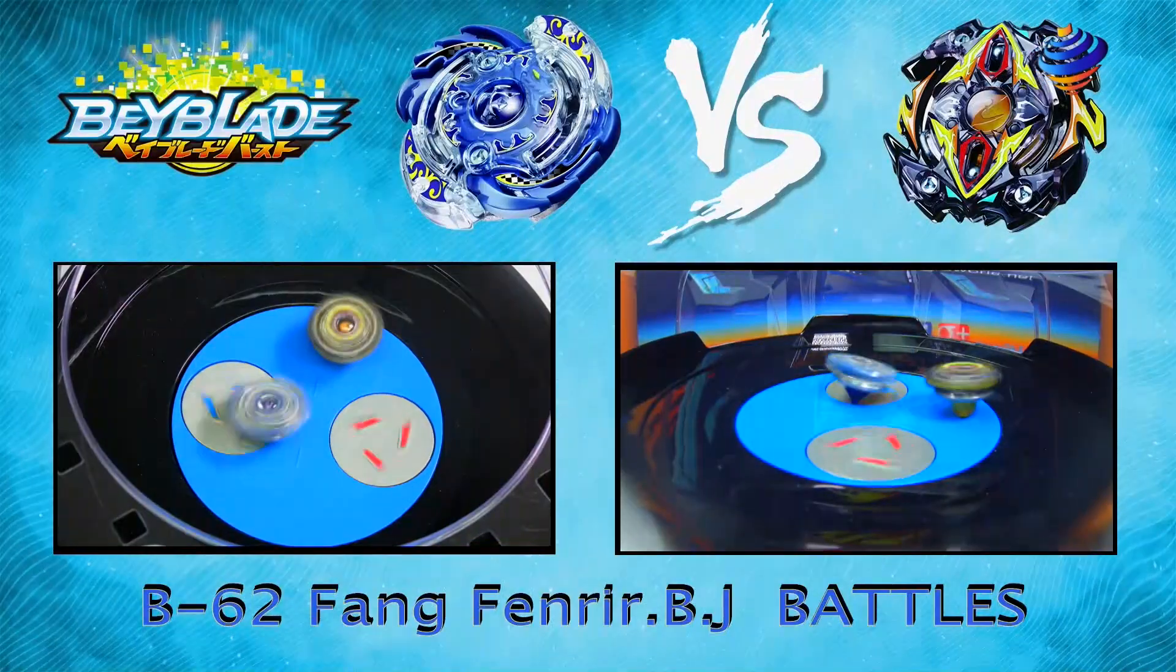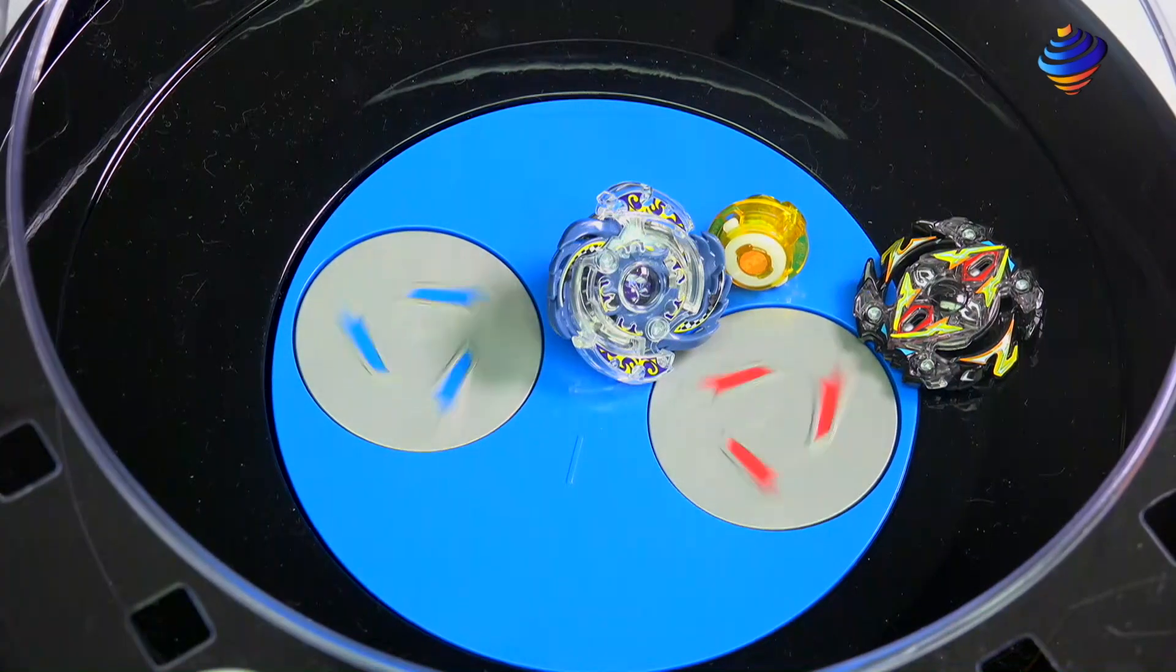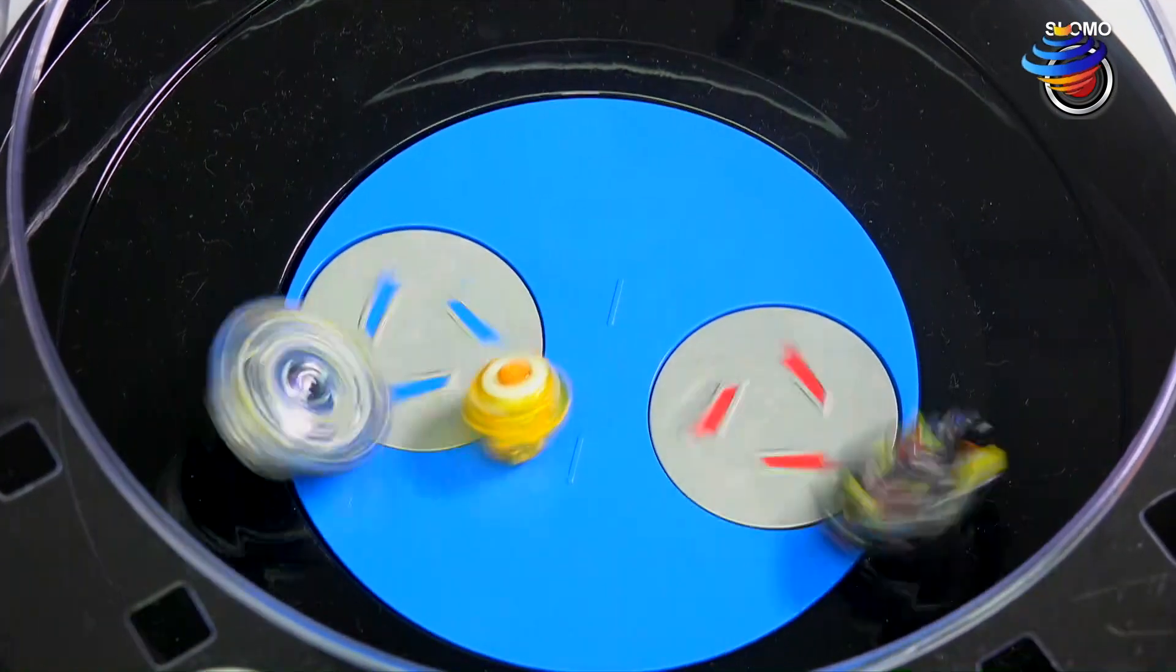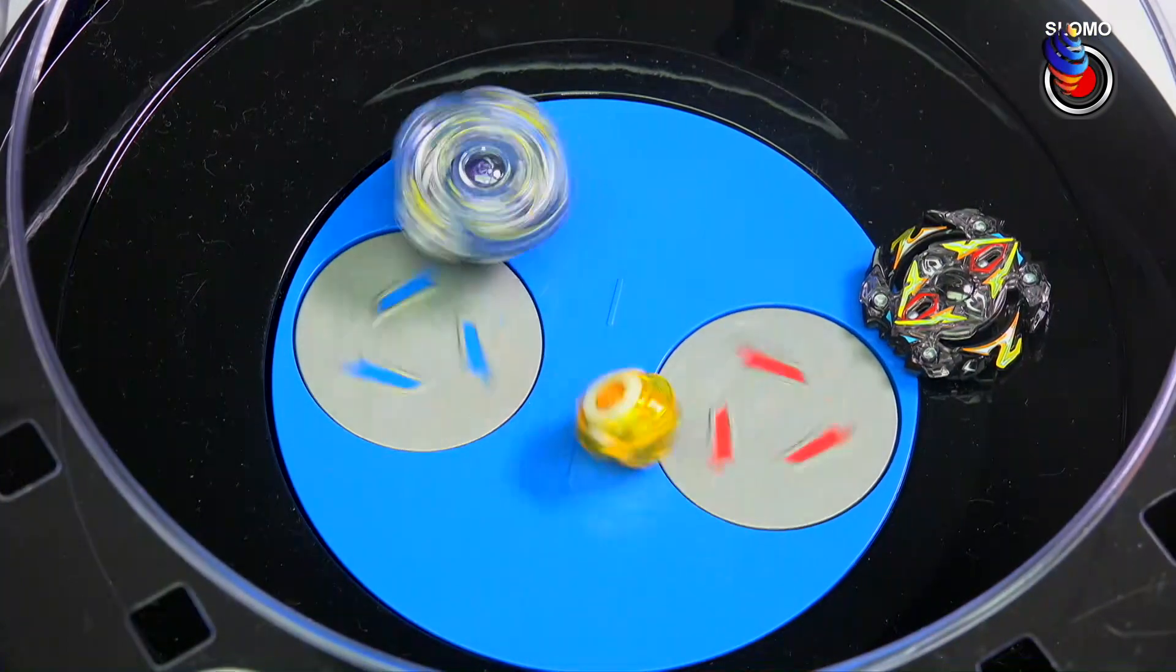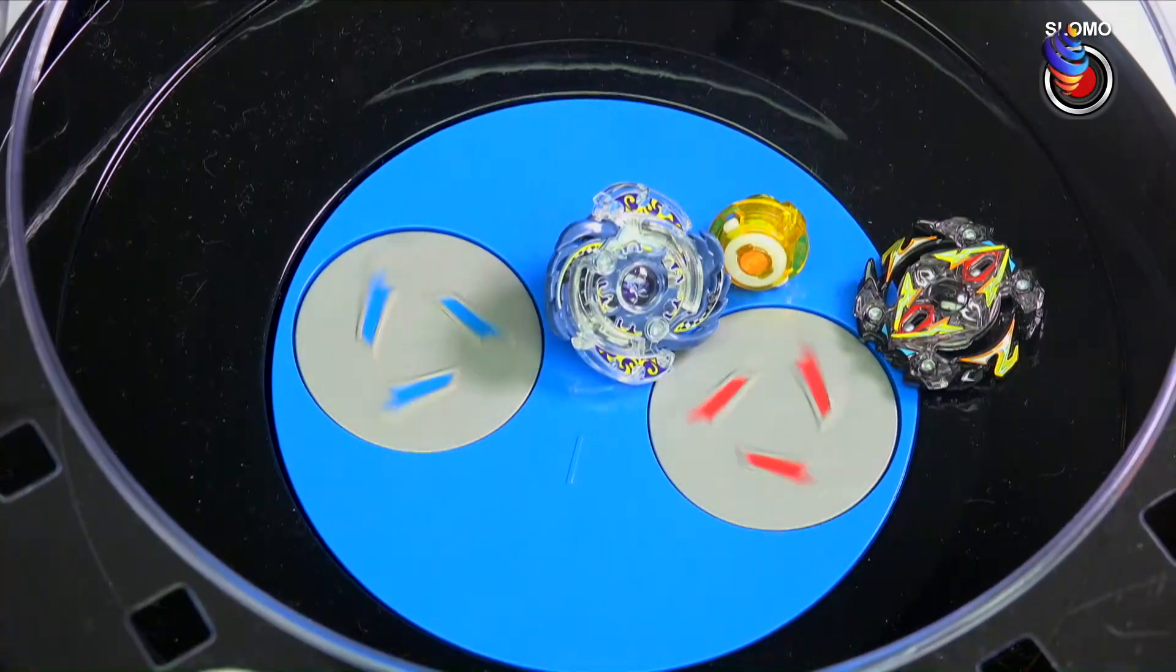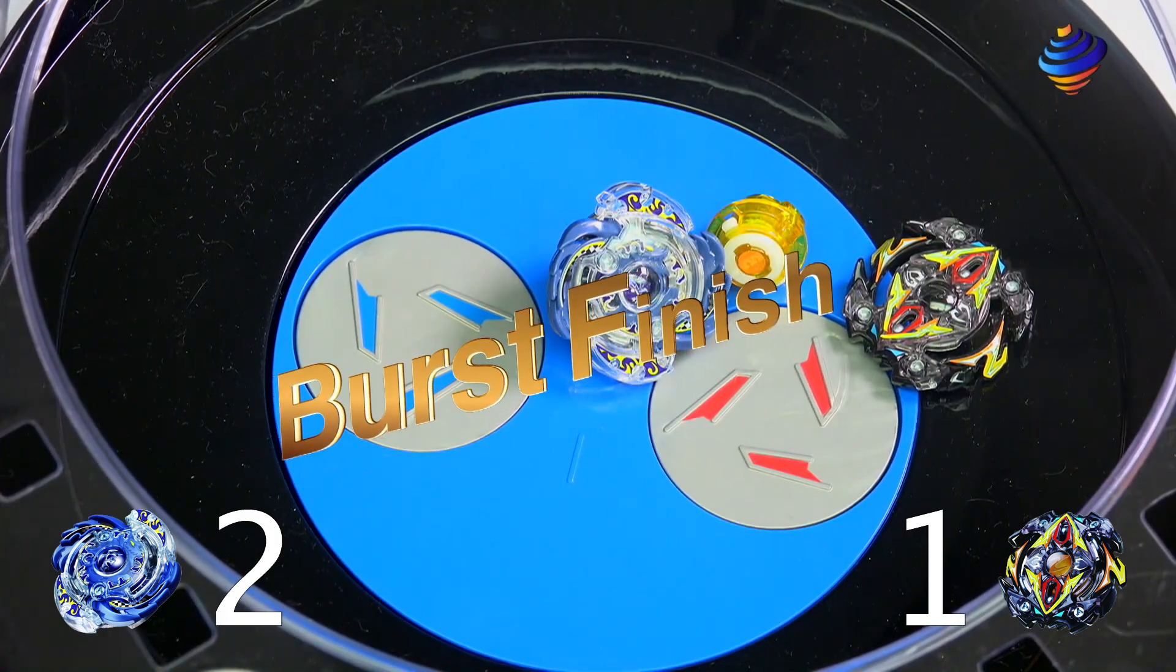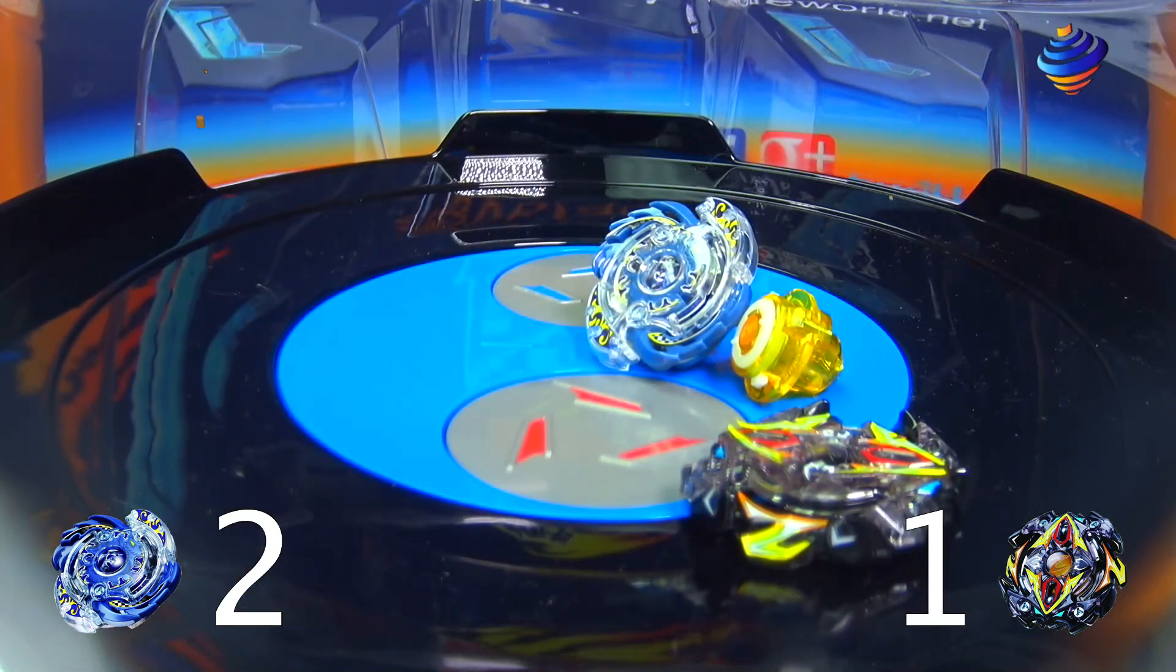Whoa, Fang almost got an over finish with that one. Come on, that's what we're talking about. First time in this entire battle series we've actually seen a burst finish. Our winner is Fang Finner with a score of 2-1 with a burst finish, pretty awesome.